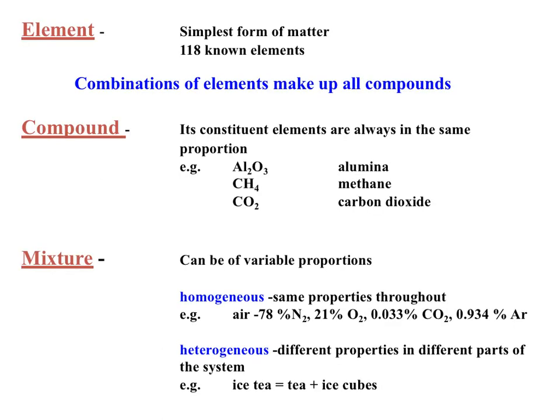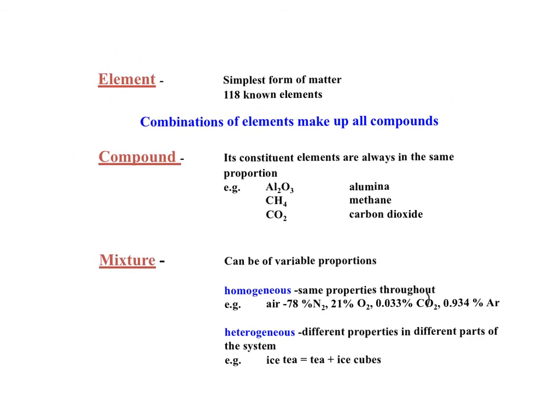Now let's look at the differences between elements, compounds, and mixtures. The periodic table is now complete with 118 known elements. Elements are the simplest form of matter — if you break materials down and there's no way to separate parts, that's the simplest form. We're not talking about breaking the atom into elementary particles like protons, neutrons, and electrons, but the form of matter itself — the element.